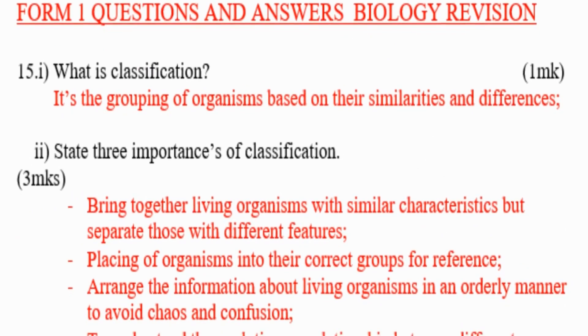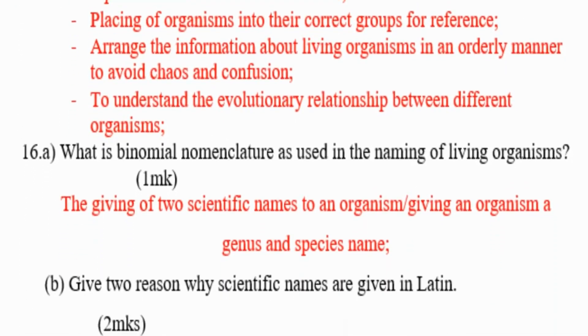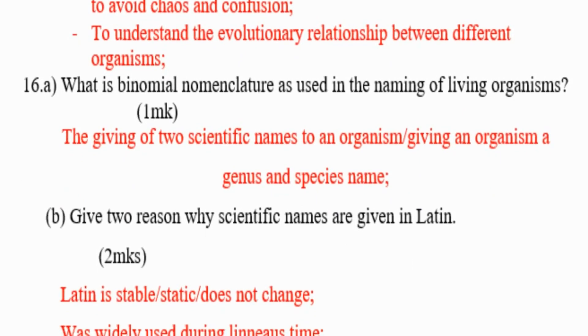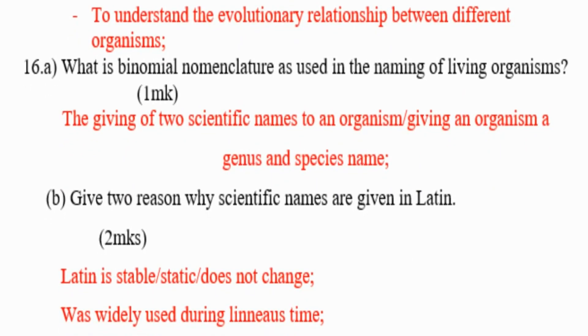Number three: arrange the information about living organisms in an orderly manner to avoid chaos and confusion. Next: to understand the evolutionary relationship between different organisms. Question number 16: What is binomial nomenclature as used in the naming of living organisms?